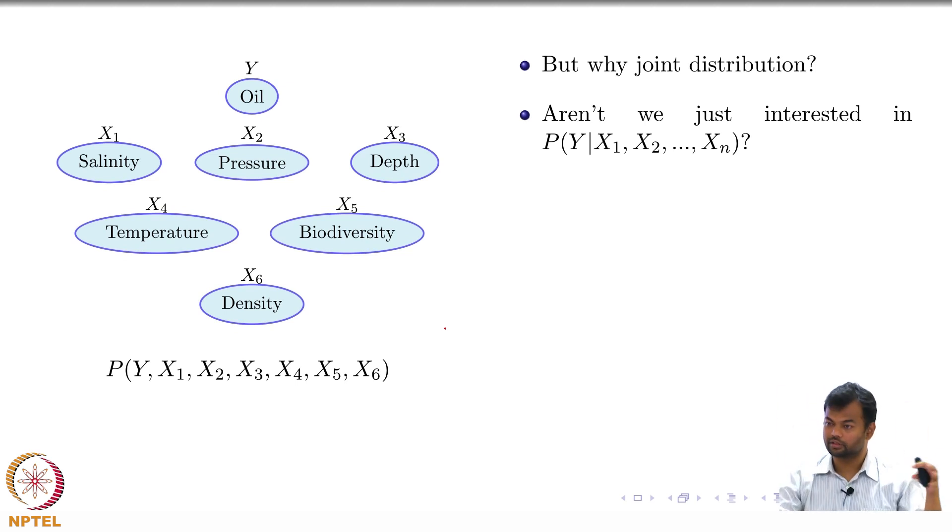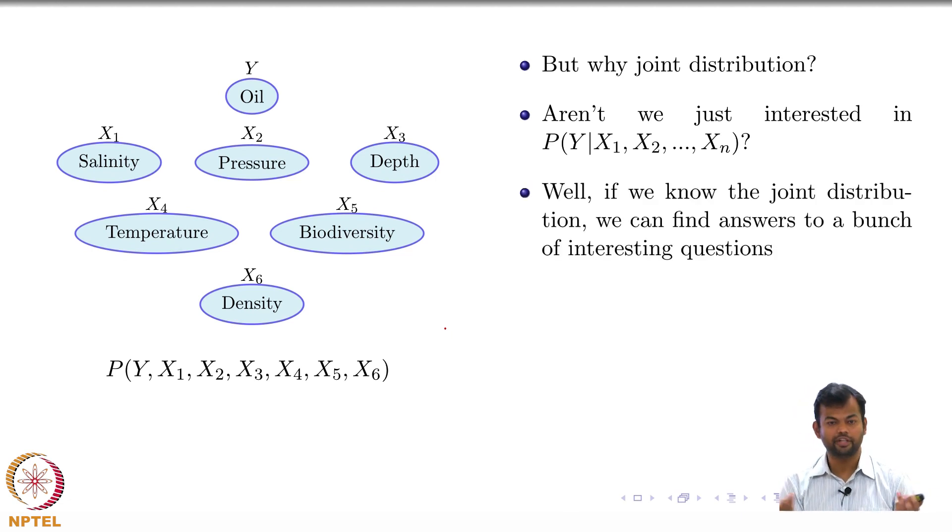Joint distribution is this kind of an encyclopedia which can allow you to answer all sorts of questions about different random variables in your ecosystem. In particular from the joint distribution, you could compute this conditional distribution that you are interested in. So let us see some such questions of interest.